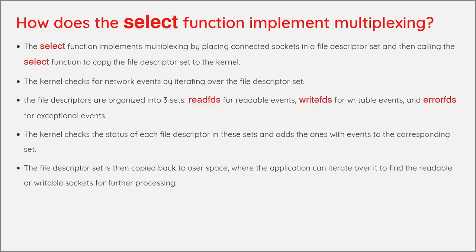How does the SELECT function implement multiplexing? The SELECT function implements multiplexing by placing connected sockets in a file descriptor set and then calling the SELECT function to copy the file descriptor set to the kernel. The kernel checks for network events by iterating over the file descriptor set. The file descriptors are organized into three sets: READFs for readable events, WRITEFs for writable events, and ERRFs for exceptional events. The kernel checks the status of each file descriptor in these sets and adds the ones with events to the corresponding set, then copies it back to user space where the application can iterate over it to find readable or writable sockets.